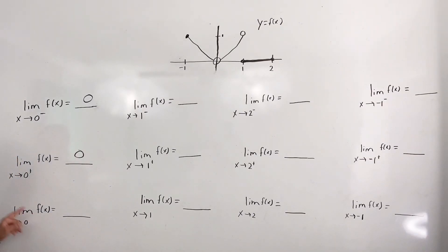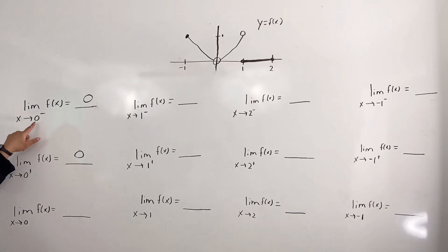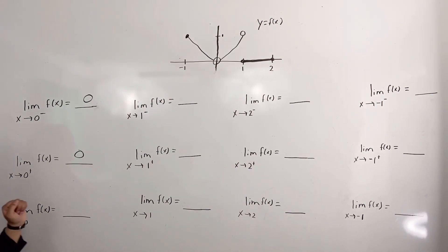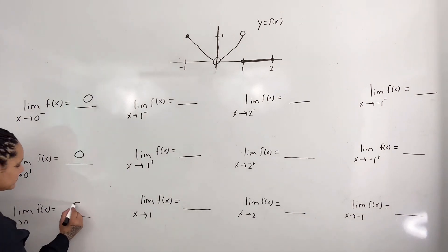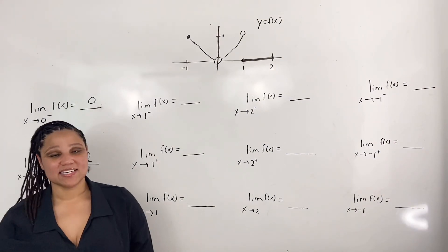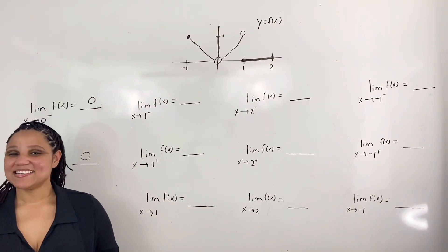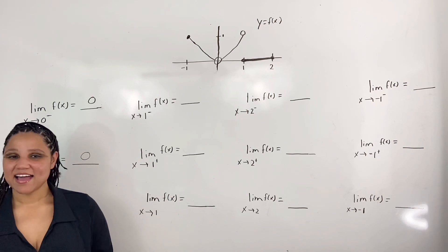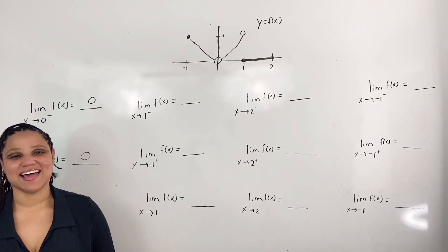Next, we evaluate the limit as x approaches 0. Since the limit as x approaches 0 from the left is equal to the limit as x approaches 0 from the right, and that limit is 0, then the limit as x approaches 0 is 0. Note that although we have an open circle by x equals 0, the limit as x approaches 0 still exists. This is because a function does not have to necessarily be defined at a point in order for the limit to exist at that point.